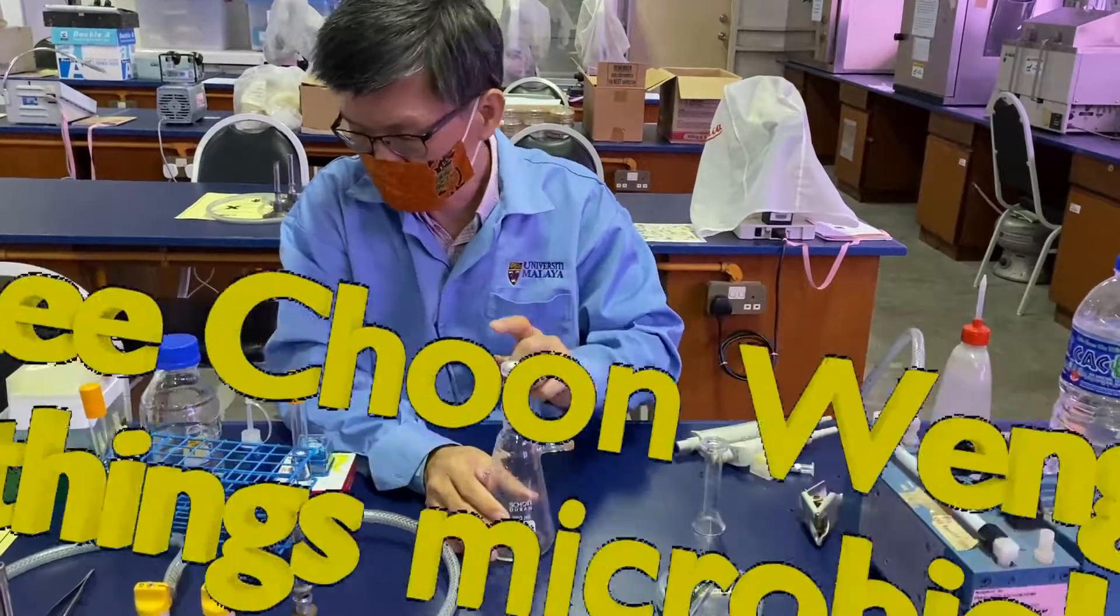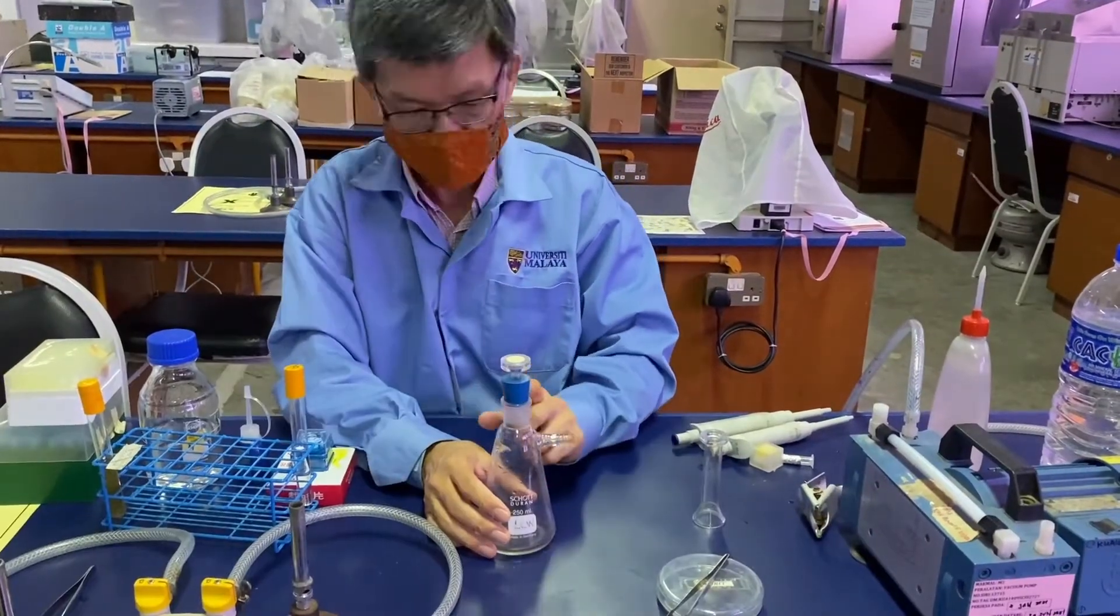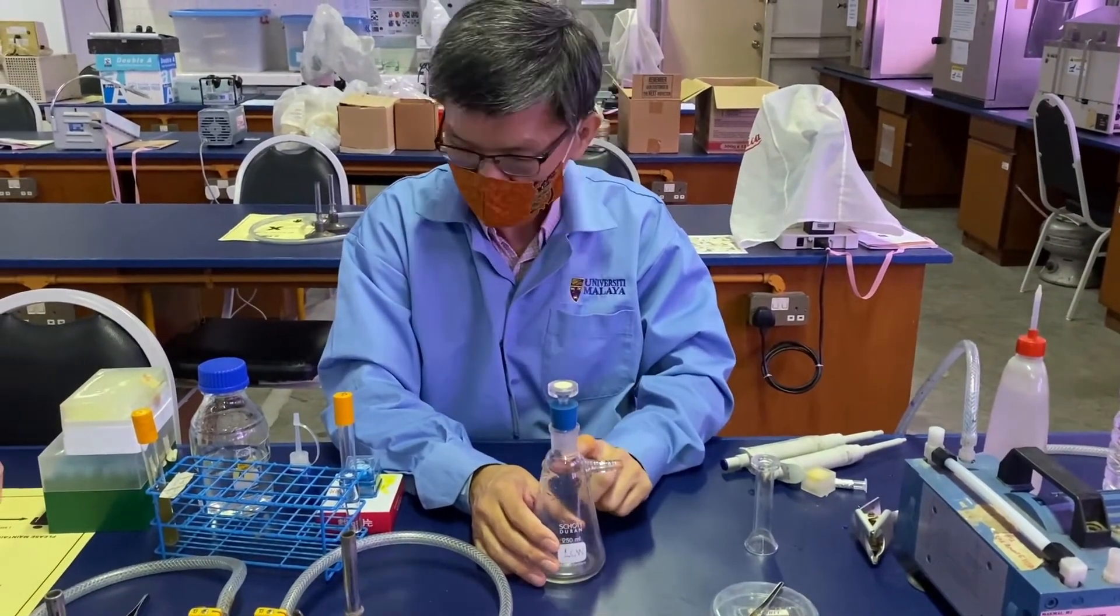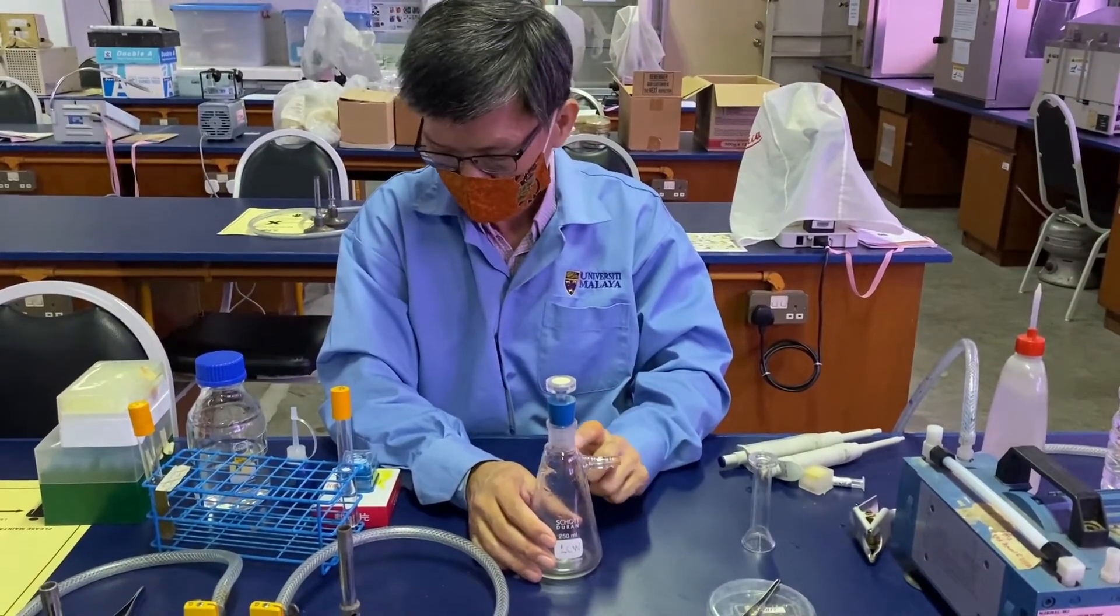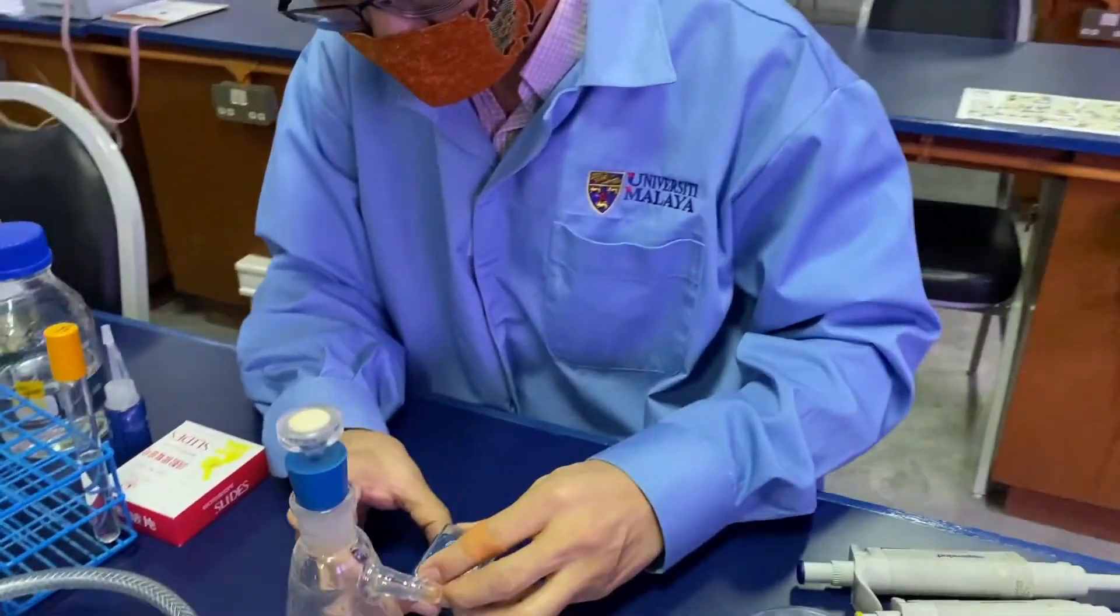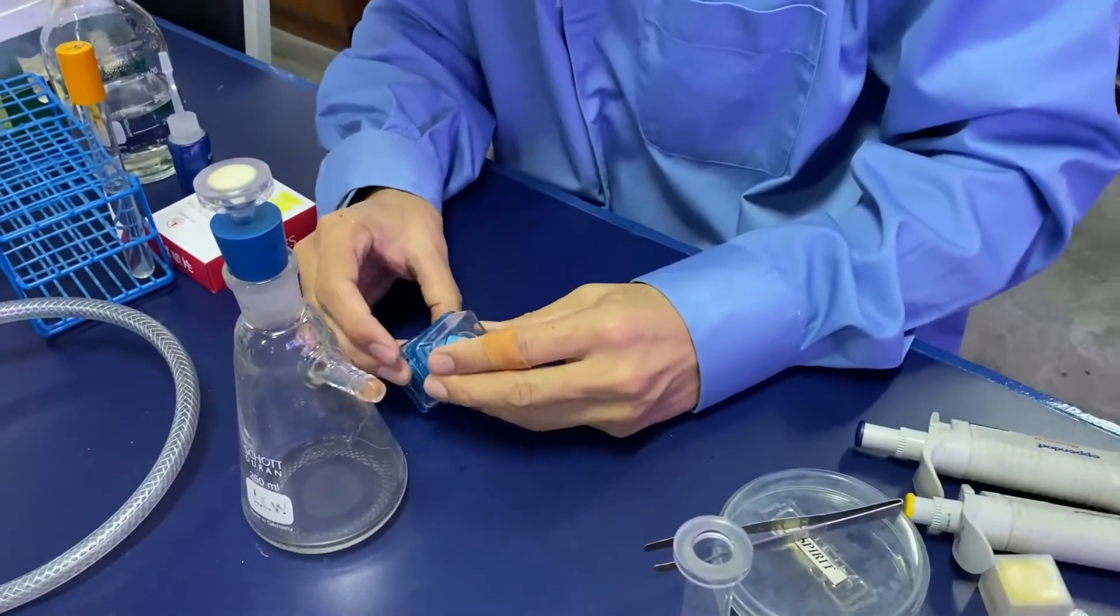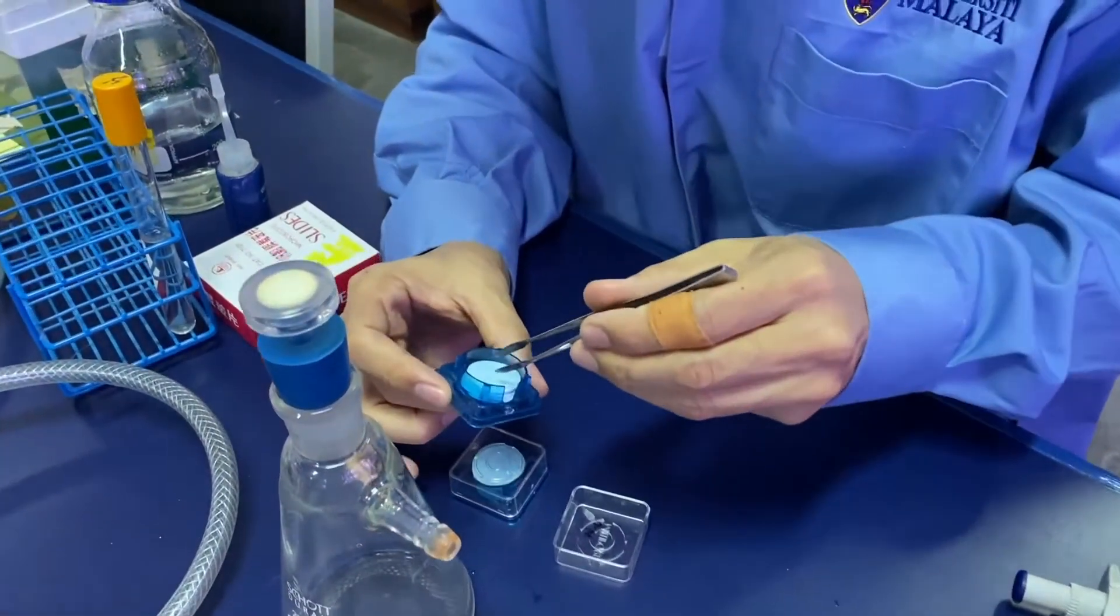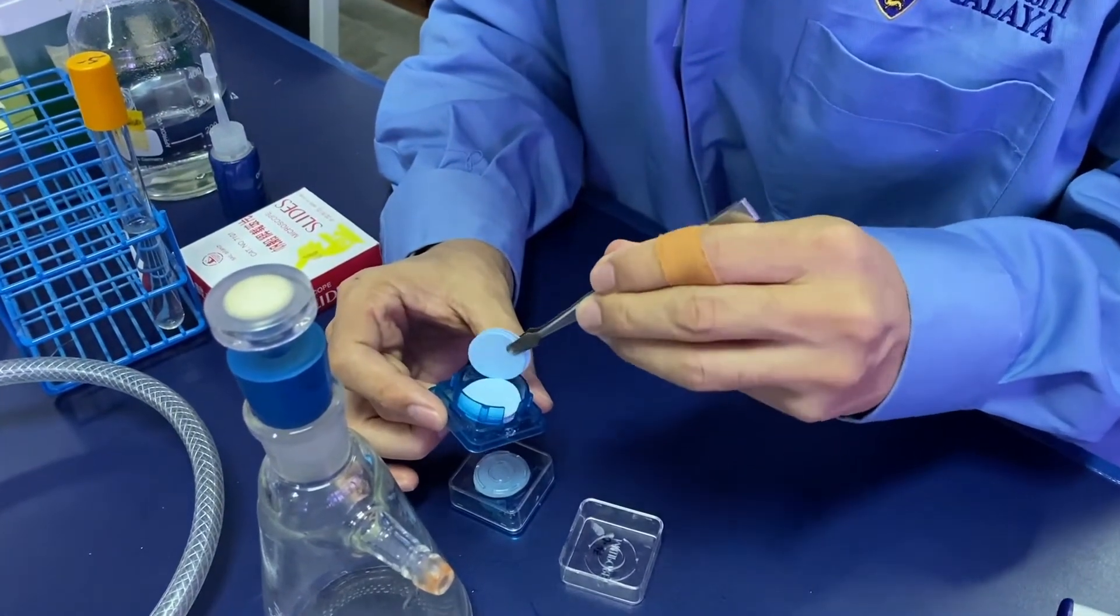This shows the direct counting method using DAPI where we use a filtration set with a 25 millimeter diameter. We have to place a backing filter first.